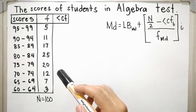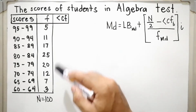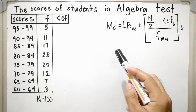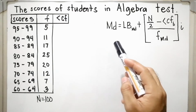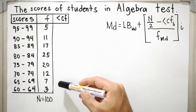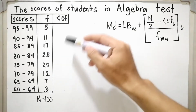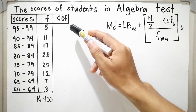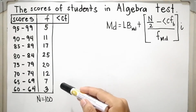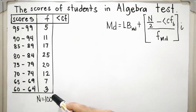In some books, the usual given are the scores and the frequency only, so it's up to you what column to add depending on the problem you are going to solve. Since we are solving the median of the frequency distribution table, we need to add the column of the less-than cumulative frequency.